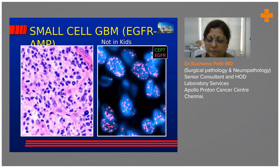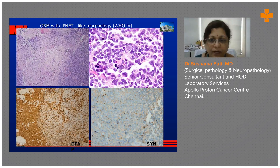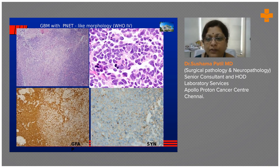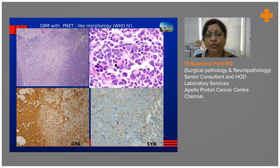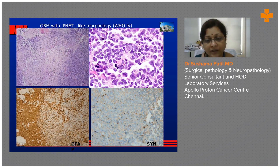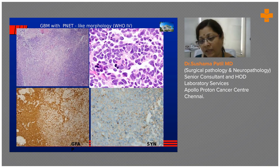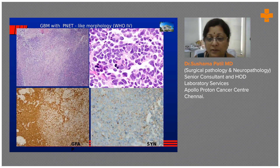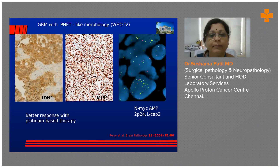Another subtype of glioblastoma shows embryonal features. When conventional GBM starts showing embryonal features, you worry about a hybrid tumor, but there is actually a subset of GBM that shows a peanut-like morphology. Wherever there is a glial component, GFAP — glial fibrillary acidic protein — is positive. But when it transforms into the peanut-like component, it shuts off GFAP epitopes and gains synaptophysin positivity, indicating neuronal differentiation.